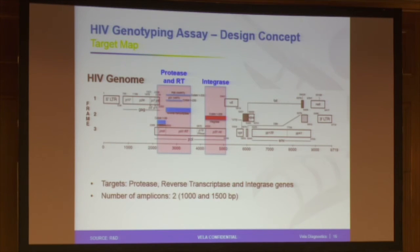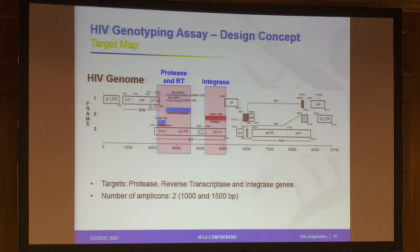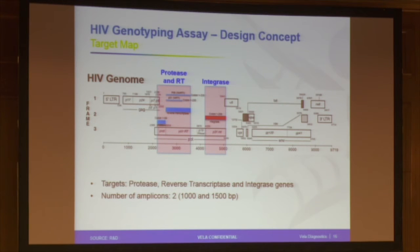Let me switch briefly to the HIV assay, which was developed after the HCV assay, so it's not at the same stage. It's currently on the market for RUO purposes only. The genome targets we're looking at are the protease and reverse transcriptase genes, and additionally the integrase gene — so in one run you get protease, reverse transcriptase, and integrase. With the withdrawal of the Siemens TrueGene assay from the market, this is the only assay that can do that. Two amplicons are generated: one of 1,000 and one of 1,500 base pairs, used for library preparation and sequencing.